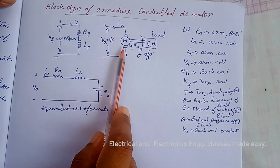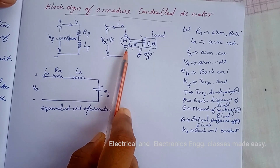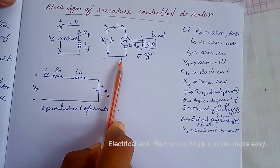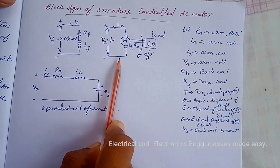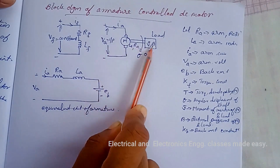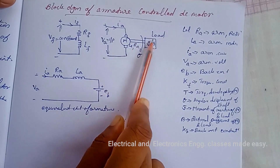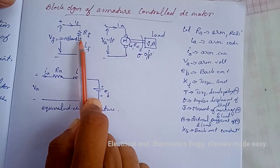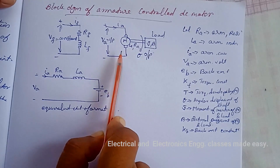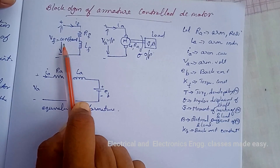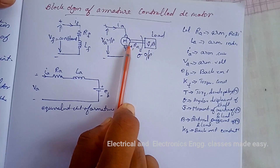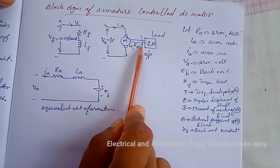The speed of a DC motor is directly proportional to armature voltage and inversely proportional to the flux in the field winding. In an armature controlled DC motor, the desired speed is obtained by varying the armature voltage. This speed control system is an electromechanical control system. The electrical system consists of the armature and field circuit, but for analysis, only the armature circuit is considered because the field is excited by a constant voltage. The mechanical system consists of the rotating part of the motor and the load connected to the shaft.